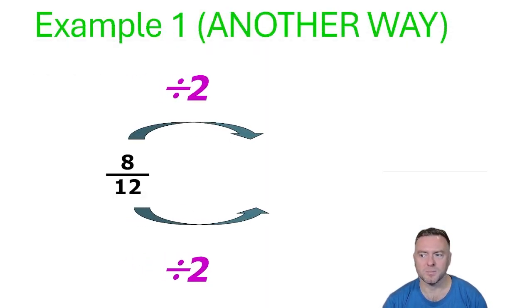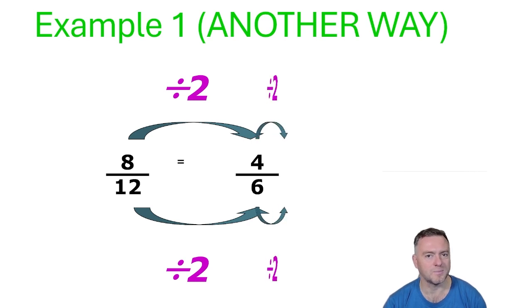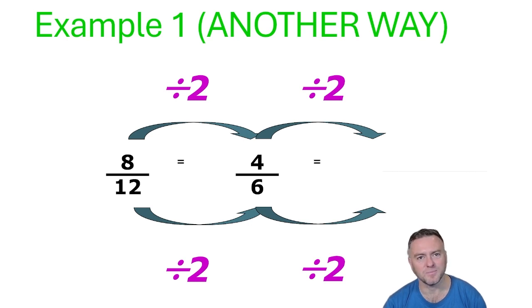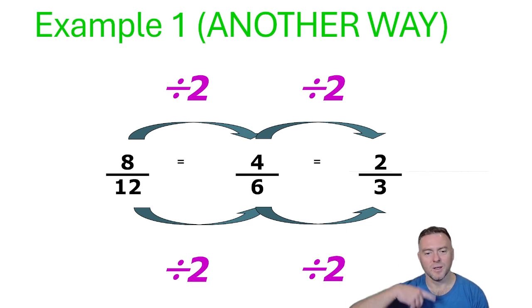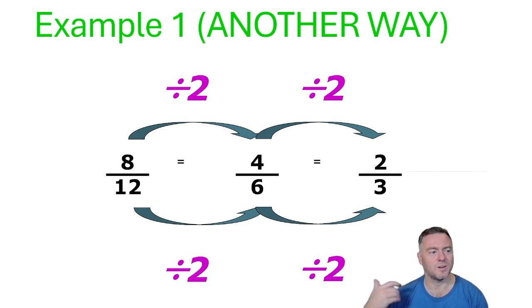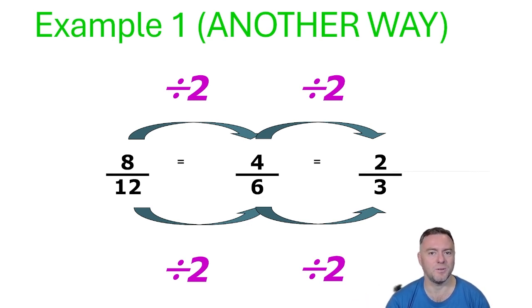Another way of explaining this is you can use the sieve approach. So we can divide by 2, then divide again by 2, and then we get to our answer. If you ever get stuck and you can see they're both even numbers, just keep dividing by 2 until you can't do that anymore. This is another approach if you don't know your times tables so well.